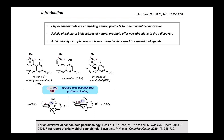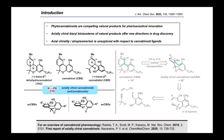Atropisomerism presents both challenges and opportunities to modern drug design. We previously reported a scalable first-generation synthesis of the parent axially chiral cannabinoid, or AXCBN, the C9 to C10 methyl-transposed isomer of cannabinoid CBN, a lesser-known phytocannabinoid that is essentially the product of THC oxidation. The net methyl transposition increases the ground state dihedral angle from 19 degrees in CBN to 38 degrees in AXCBN.